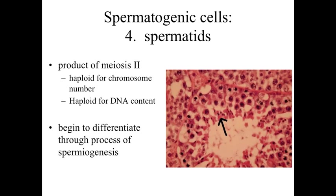What we can see are the products of meiosis II, which are haploid for both chromosome number and DNA content. These are referred to as spermatids. Spermatids are haploid cells — germ cells — but they don't yet look like mature sperm cells because they still have to go through a process of differentiation called spermiogenesis, where a relatively round undifferentiated haploid cell is prepared for its function as a mature functioning sperm cell.